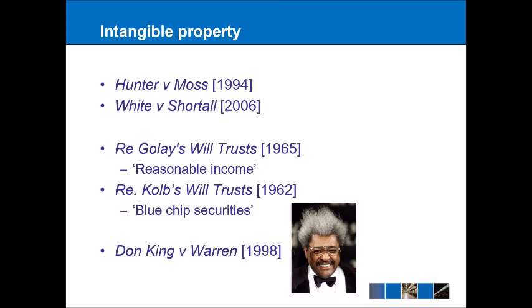Finally, in Don King v Frank Warren 1998, these two boxing promoters had a partnership. This case illustrates that non-transferable assets such as personal contracts can also form part of a trust, providing further examples of intangible property that can constitute trust subject matter.